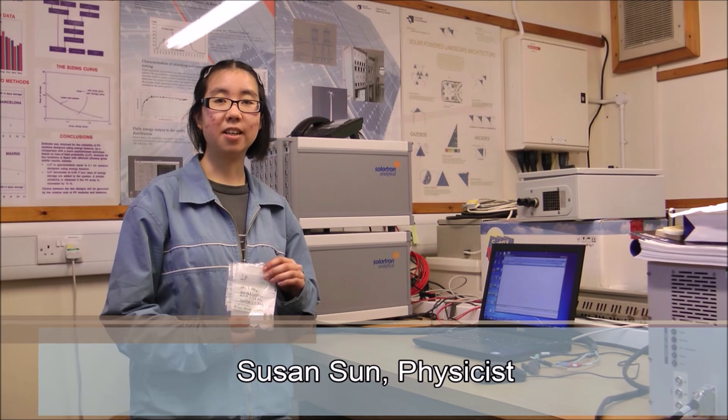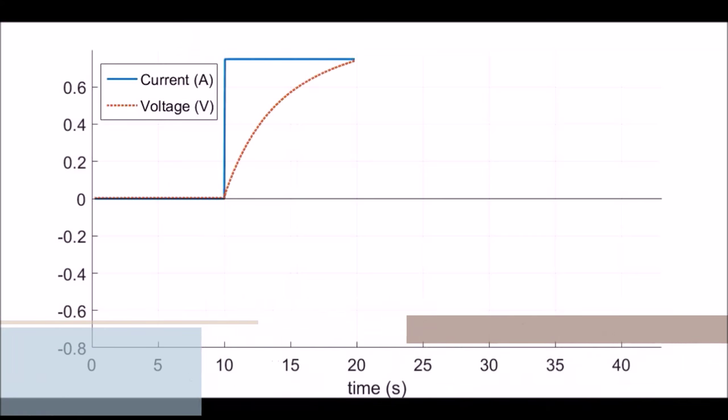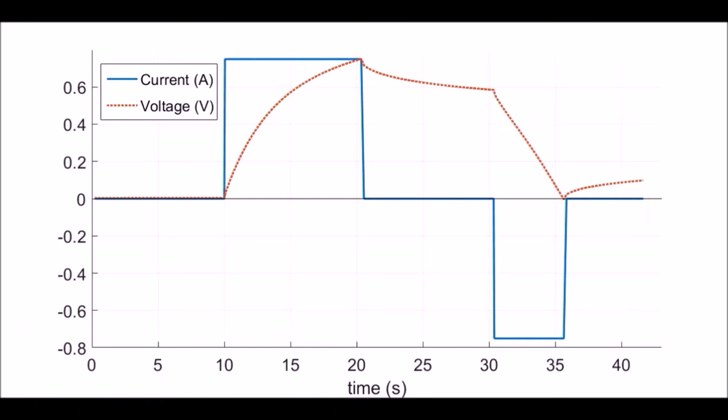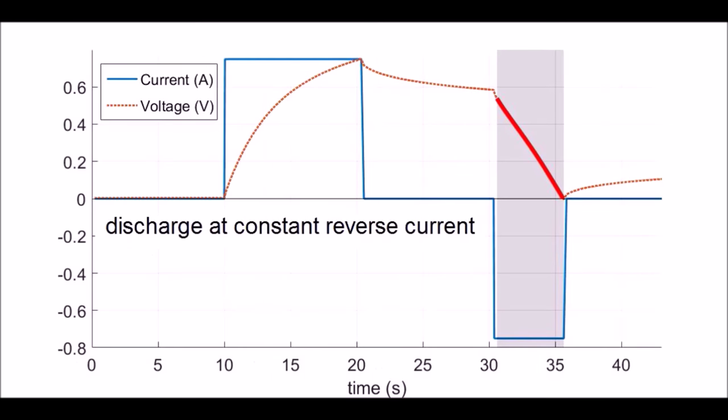First we subject our coin cells to galvanostatic cycling, charging at constant current and measuring the voltage that builds up across them. A good supercapacitor has the following features: a long self-discharge time so it can store energy for longer, a small equivalent series resistance or ESR because that dissipates energy as heat, and a slow discharge at reverse current indicating higher capacitance.